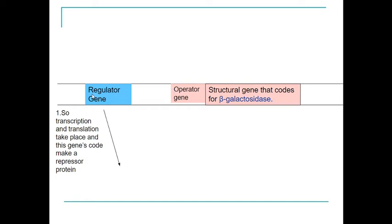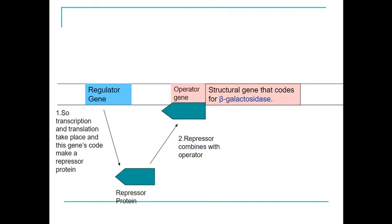First, we have the regulator gene which is being produced or transcribed and translated. We now have the repressor protein. The repressor protein will bind to the operator. In this case, we're not going to get transcription and translation of beta-galactosidase because lactose is not present.